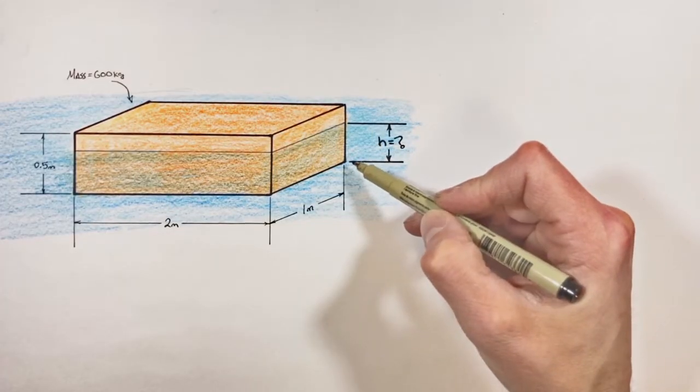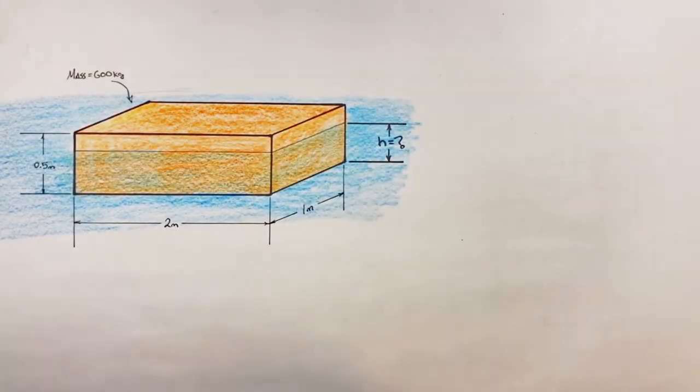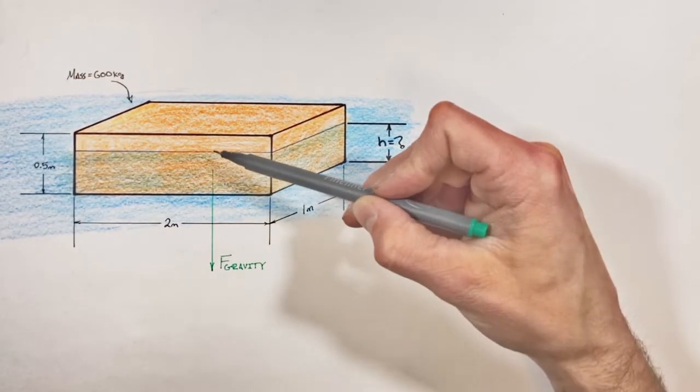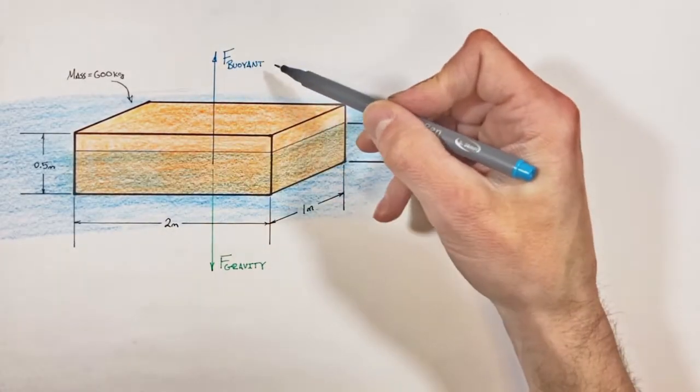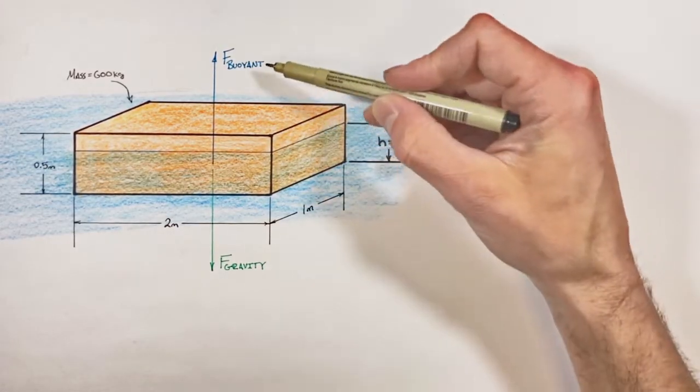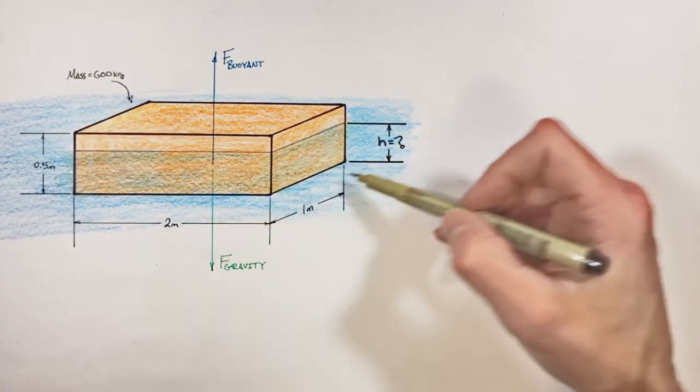the forces which are acting on this block. Now the first force we have to worry about is gravity, which is pulling this entire block downward, and then there's the buoyant force which is keeping this block afloat. Now the important piece here is that these two forces are equal and opposite one another. That is to say, the block is in equilibrium. These two quantities have to be equal to each other because if the force by gravity was